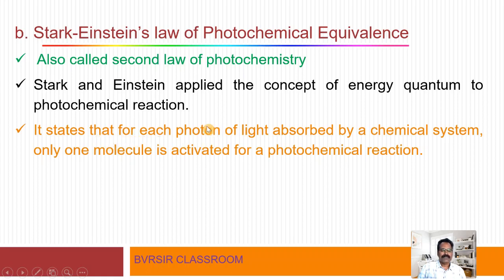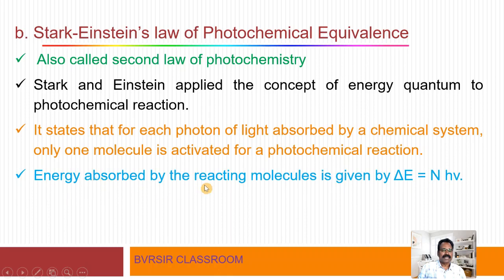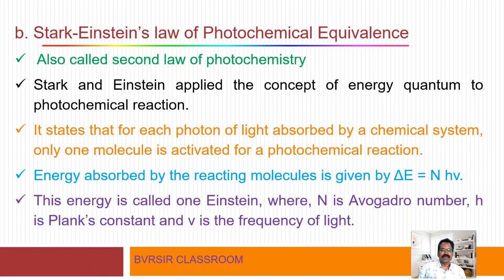It states that for each photon of light absorbed by a chemical system, only one molecule is activated for a photochemical reaction — a one-to-one relationship. The energy absorbed by the reacting molecule is given by: delta E equals N h nu. Here, delta E is the energy, N is Avogadro's number, h is Planck's constant, and nu is the frequency of light. This energy quantity is called an Einstein.